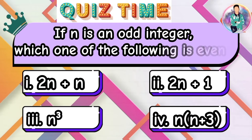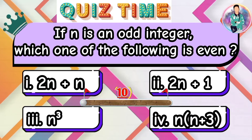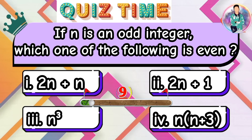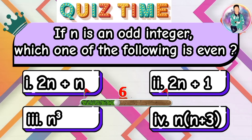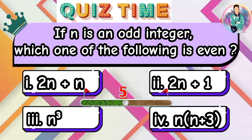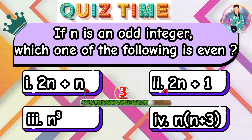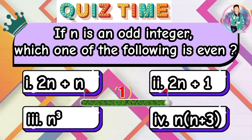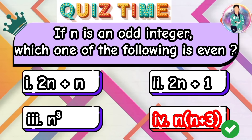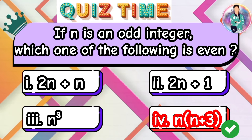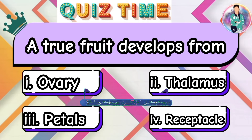If MN is an odd integer, which one of the following is even? A true fruit develops from?